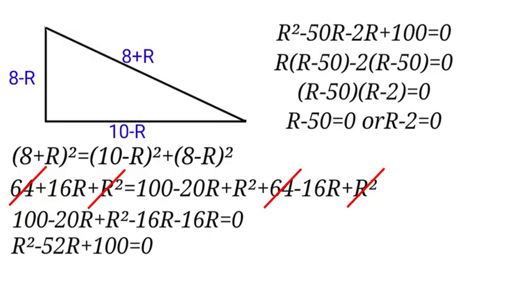Now we have common: R minus 50 is common. We take R minus 50 and then we have R minus 2 equals 0. So R minus 50 equals 0 or R minus 2 equals 0, giving R equals 50 or R equals 2. R equals 50 is not possible because the radius of the bigger circle is 8, so the radius of the small circle must be smaller than 8. We reject R equals 50, so the answer that is possible is R equals 2.